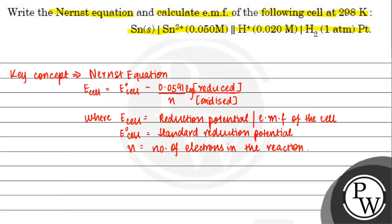We have given a cell: Sn in solid state | Sn2+ 0.050 molar || H+ 0.020 molar | H2 at 1 atm pressure | Pt which is platinum.